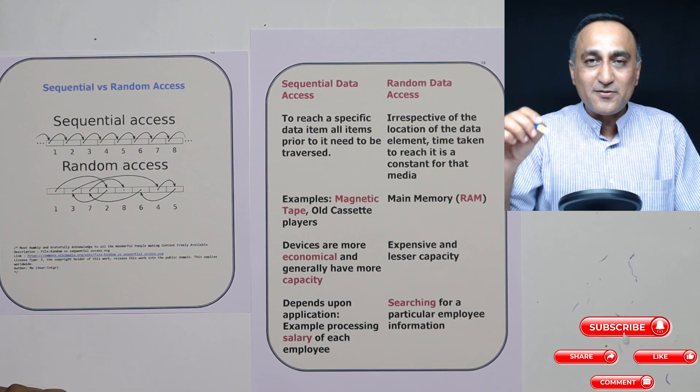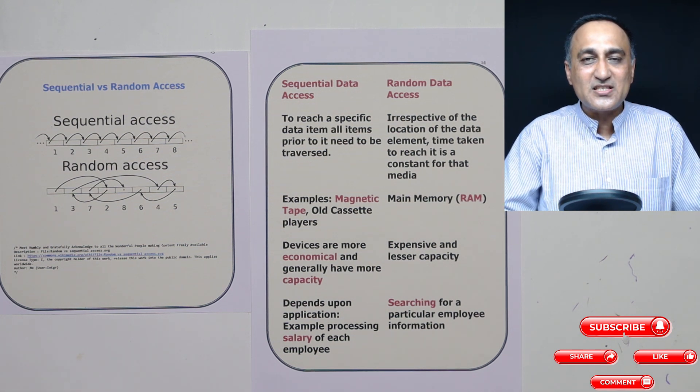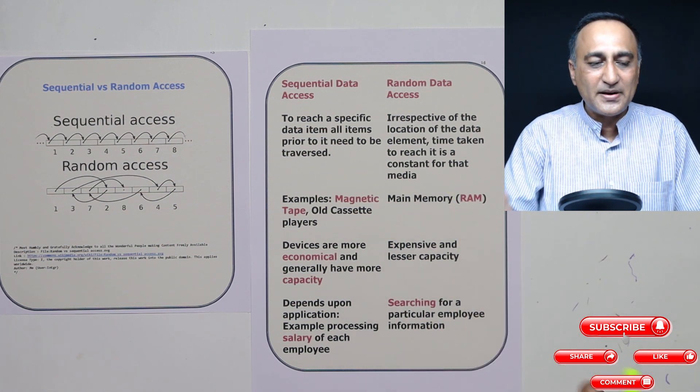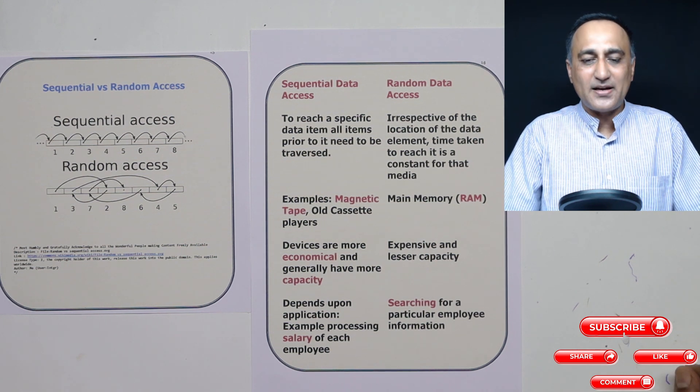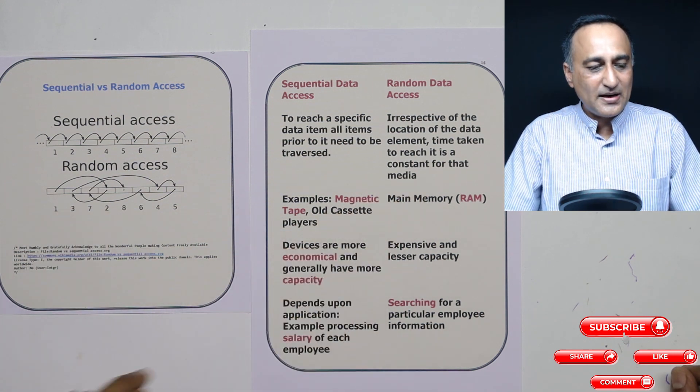But suppose I am searching for Ravi in a huge data file consisting of thousands of records. That time you are preferred to have a random data access. So with this I hope you are having a decent idea of what is sequential data access and what is random data access.